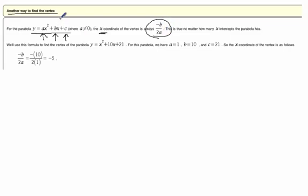So, negative of the b-coefficient, two times the a-coefficient. I said coordinate, but I meant coefficient. So, in this case, a is 1, and b is 10.